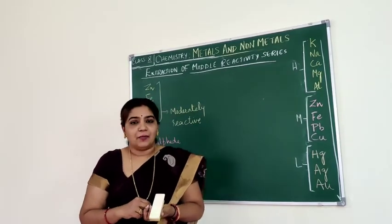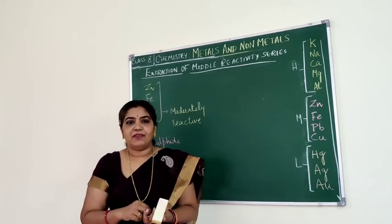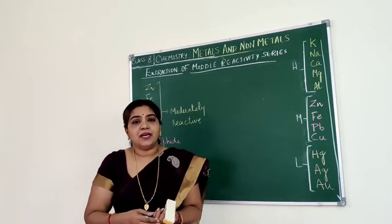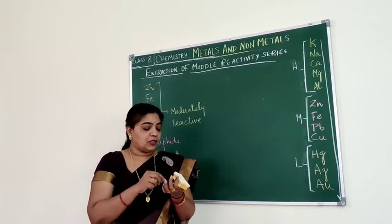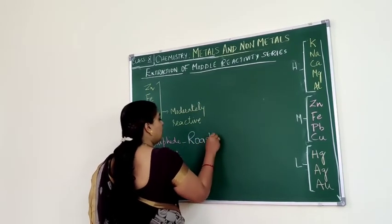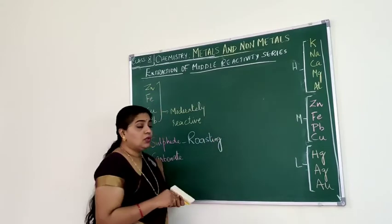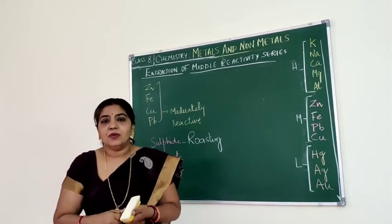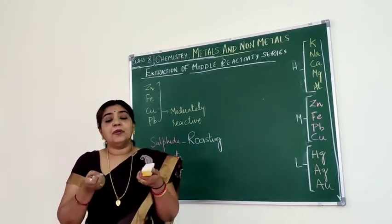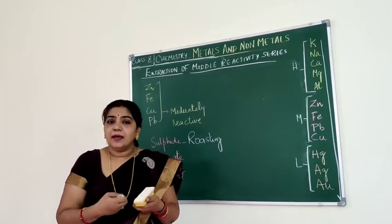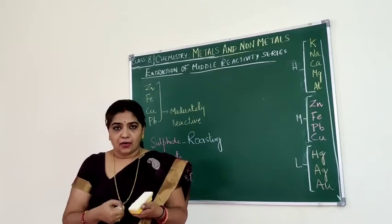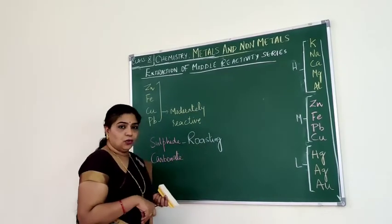If it is a sulphide ore, what should be done? It should be subjected to roasting. Roasting means heating the ore to a very high temperature below its melting point in the presence of oxygen or in excess of air.